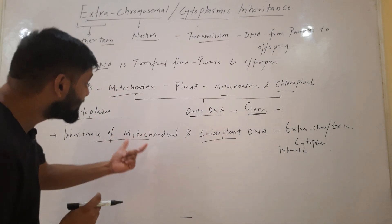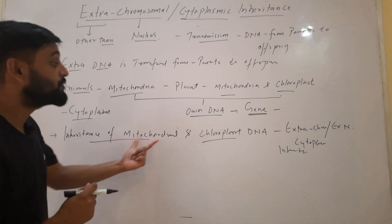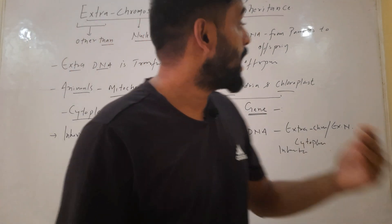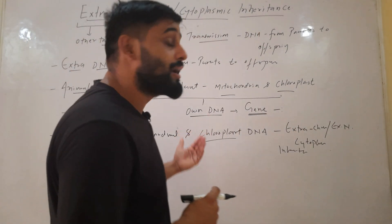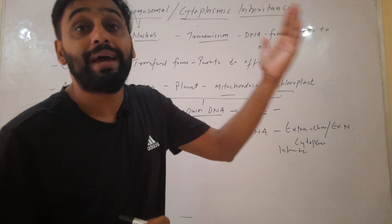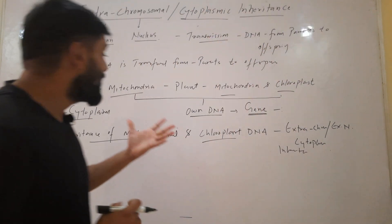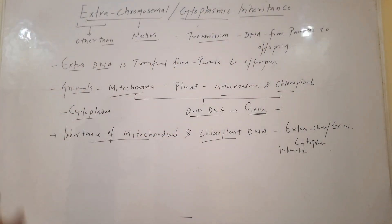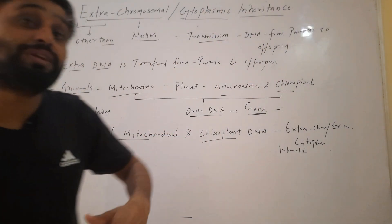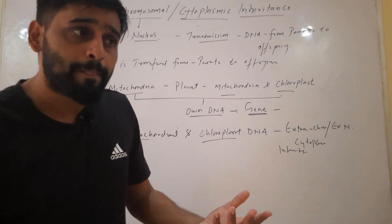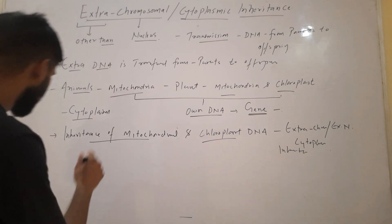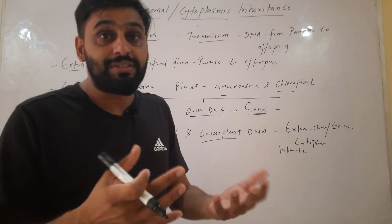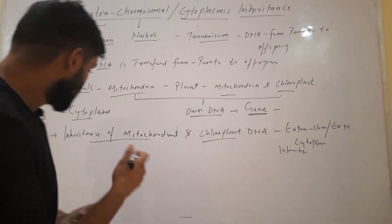How the DNA present in mitochondria and chloroplasts is inherited — meaning how it is passed from parents to offspring — is called extra chromosomal inheritance. Let us understand this with the case of humans.